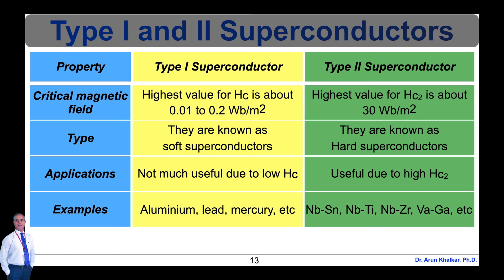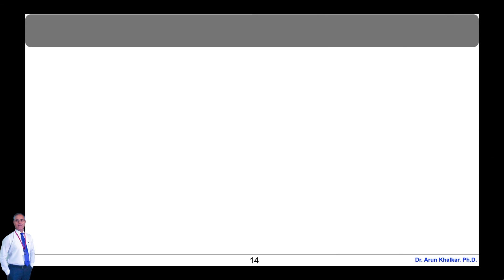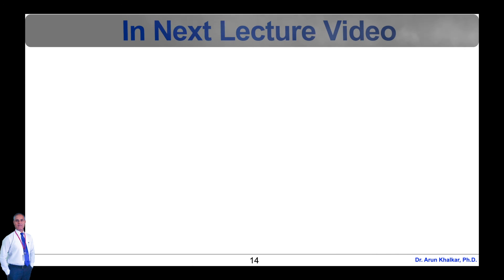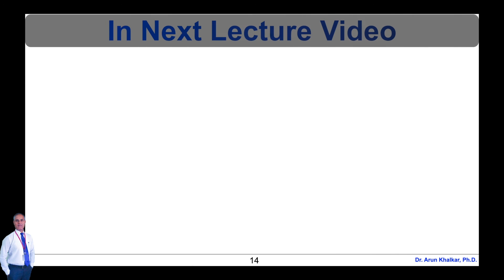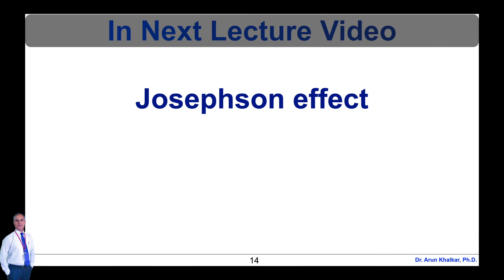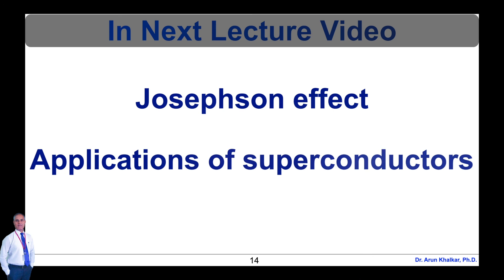So this is the comparison of type 1 and type 2 superconductors according to their properties. This is all about type 1 superconductors and type 2 superconductors. In my next lecture video, I will discuss about the Josephson effect and applications of superconductors. So please don't miss my next lecture video.